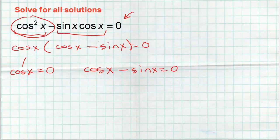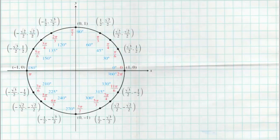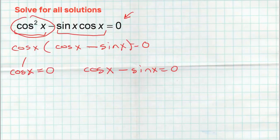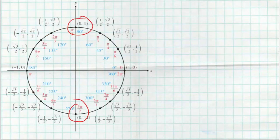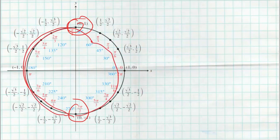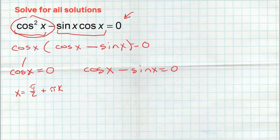The first equation using the zero product property: cosine of x equals zero. That's going to happen at pi over two and three pi over two. Now the second equation is cosine of x minus sine of x equals zero. There's nothing common to factor out of this one, but it's actually pretty easy to handle.